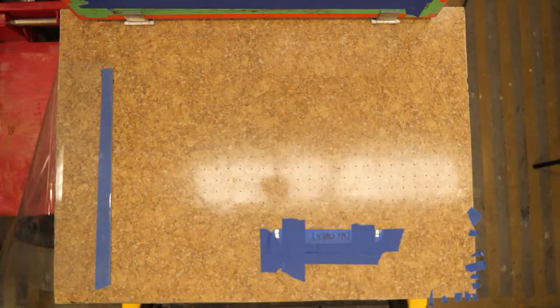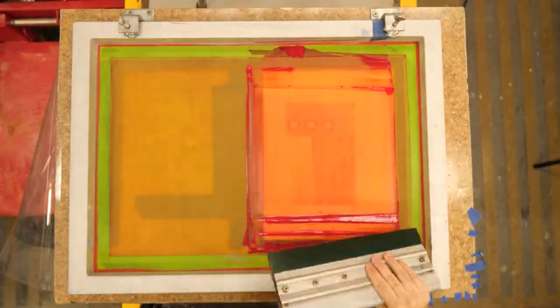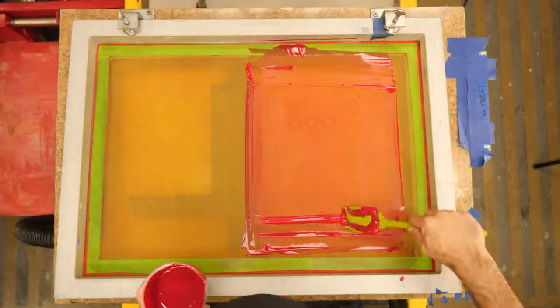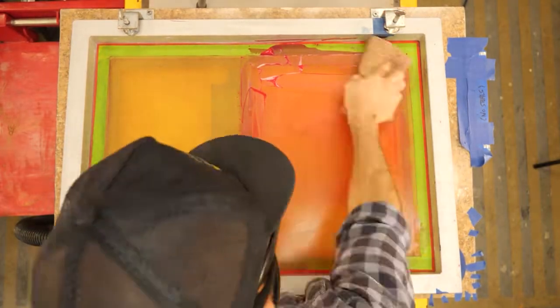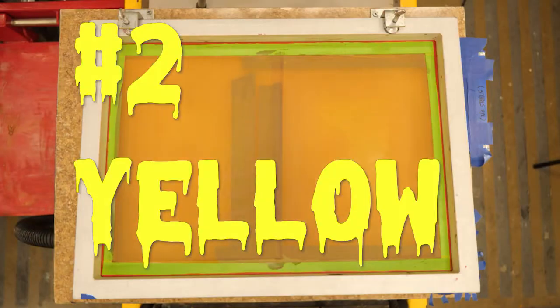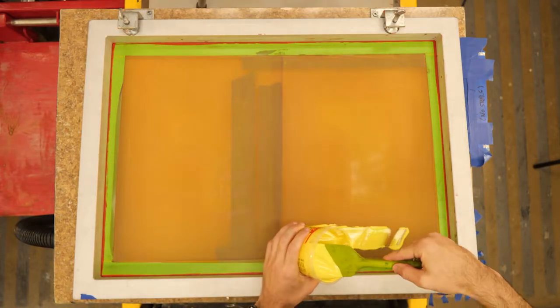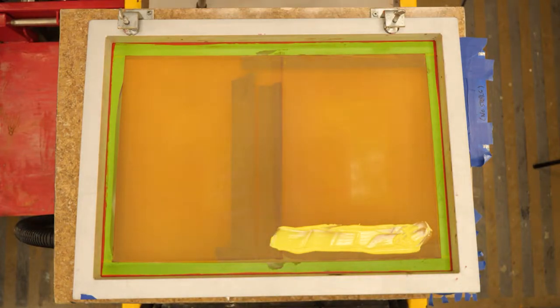And so once all the magenta is done, then I'm going to go ahead and clean out my screen, and then I'll move on to my yellow print. So I've exposed two images per screen because my images are small enough. So I have my magenta and my cyan on one screen, and I have my yellow and my black on one screen so that I can switch in between screens without too much down time. So while one's drying, I'm printing the next color. So I have the colors in order to how it's most efficient to print. So now I'm on to my yellow.